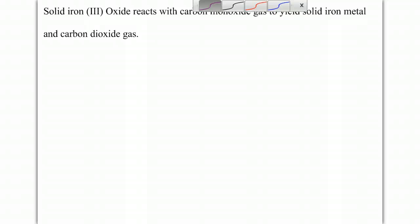I want to translate this equation into a word equation. So as I start, I have some solid iron three oxide. When you see the word 'reacts with', that means plus, you're adding. And we're gonna add carbon monoxide gas. When you see a word like 'yield', that's where you draw your arrow.